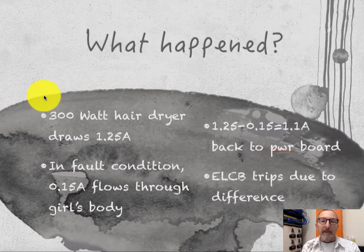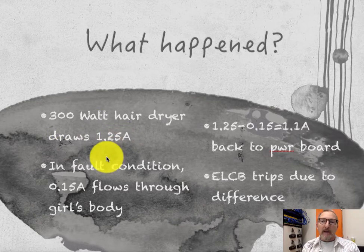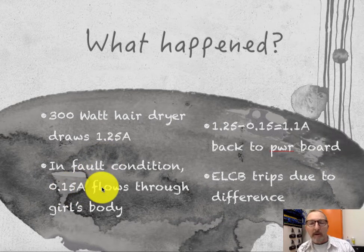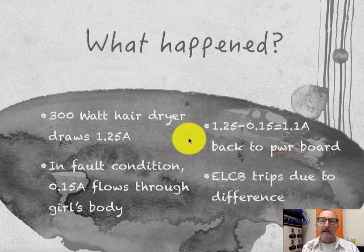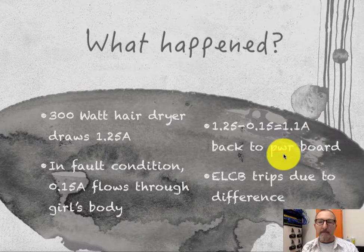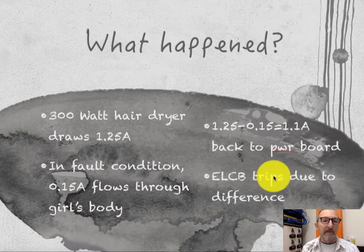Summary of what happened: 300-watt hair dryer normally drawing 1.25 amps. In a fault condition, 150 milliamps — 0.15 amps — of current flows back through the girl's body to ground. 1.25 amps minus 0.15 amps leaves 1.1 amps going back to the board. The ELCB sees that difference and trips.